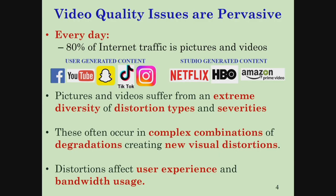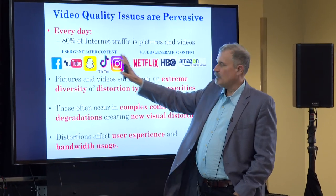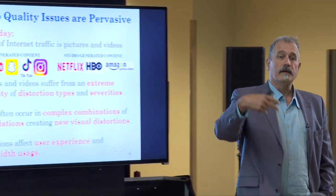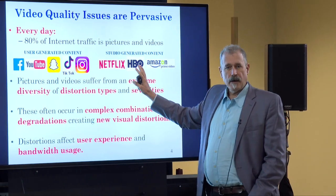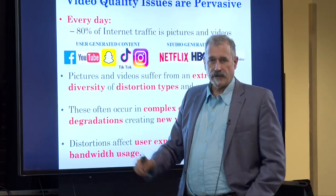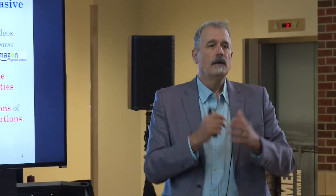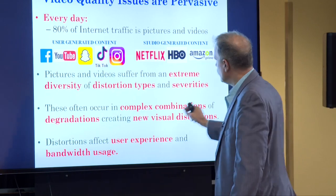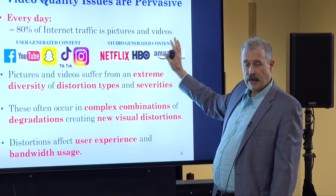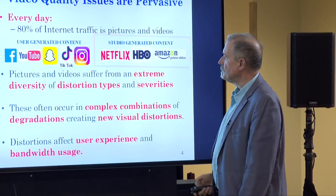I'm going to talk about two different categories of content. One is very high-quality original content — movies, cinema, high-quality television, studio-generated content like you'd see on those channels. I'm going to talk about this category today. The other category is pictures and videos generated by people with their cameras, uploaded to social media. Those tend to be very distorted after being captured. Studio content tends to be very high quality after capture, but then things happen to distort it. That's where our story today is going to follow.